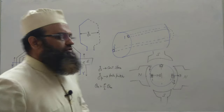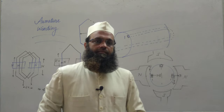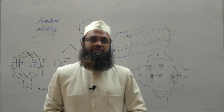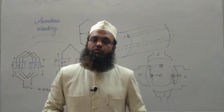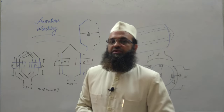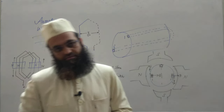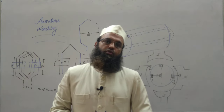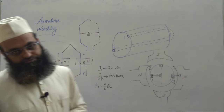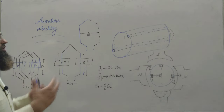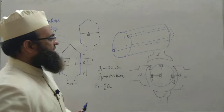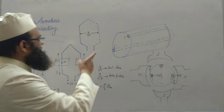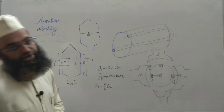Sometimes we use a fractional pitch coil — a winding having its coils fractional-pitched is known as fractional or chorded winding. Sometimes we use chorded winding in DC machines to improve commutation, but we have to sacrifice in overall EMF induced, which will be lesser than when using full pitch winding.